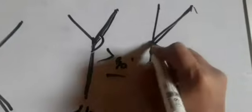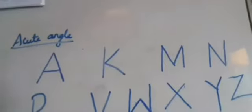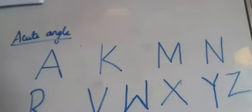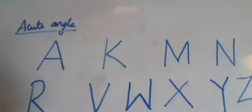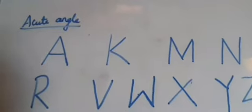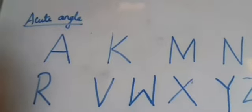Similarly for K, the angle formed is of obtuse angle — it is more than 90 degrees, so it is an obtuse angle. Now let's see the examples of acute angle in your classroom. The alphabets like A, K, M, N, R, V, W, X, Y, and Z form acute angles.